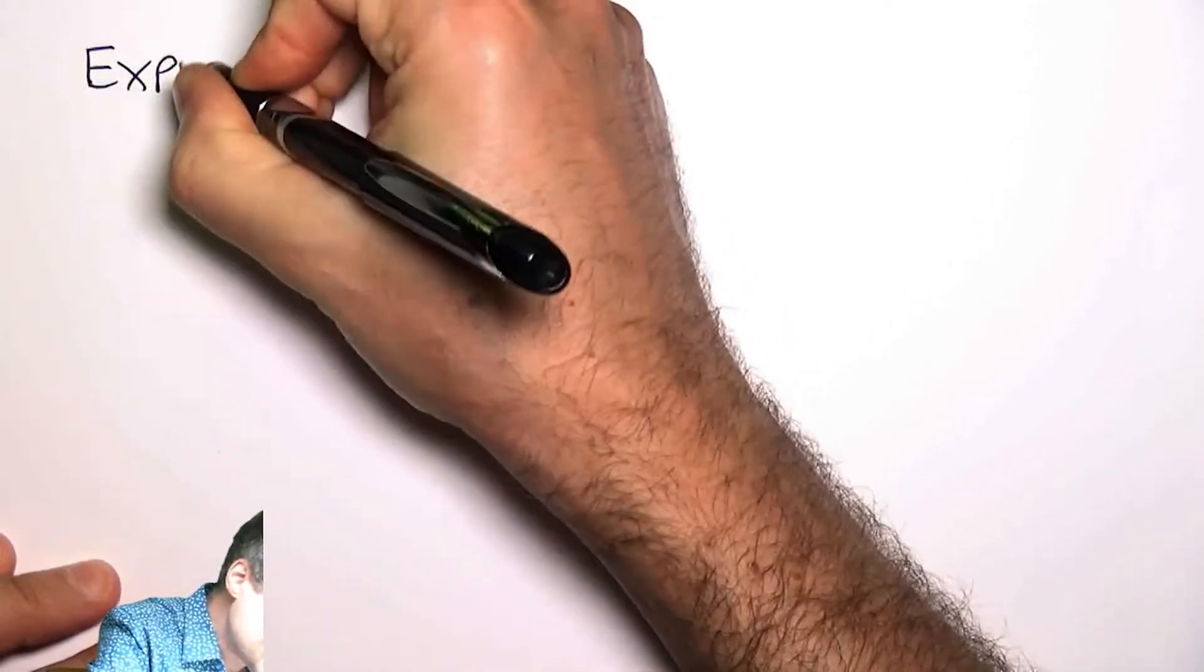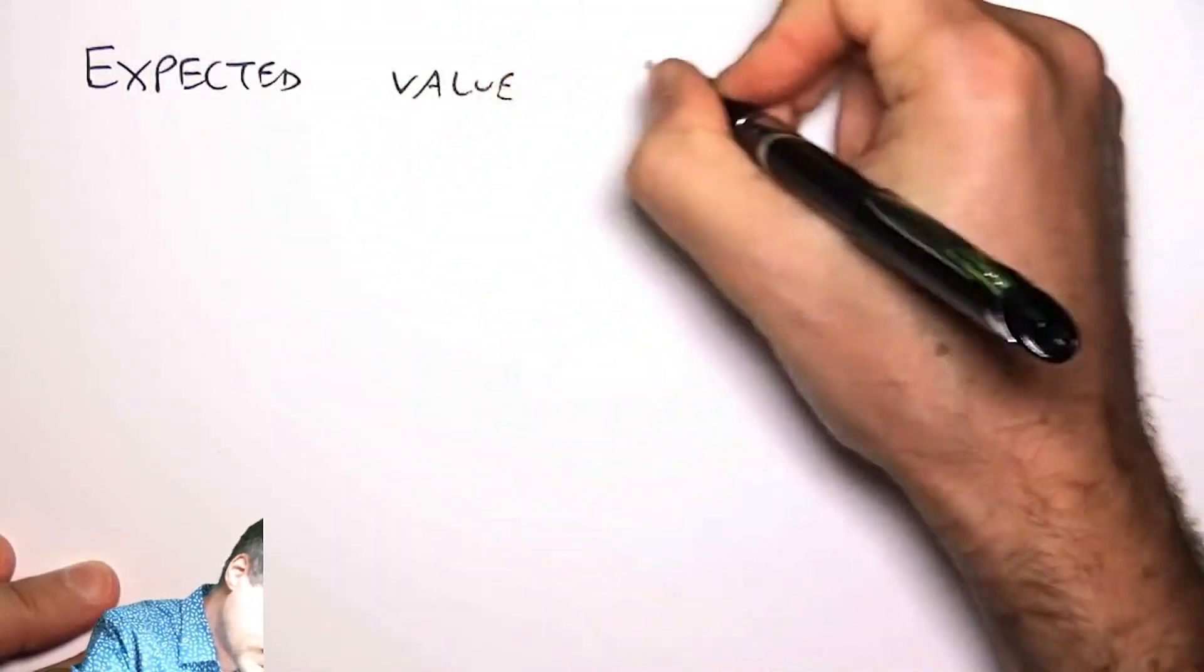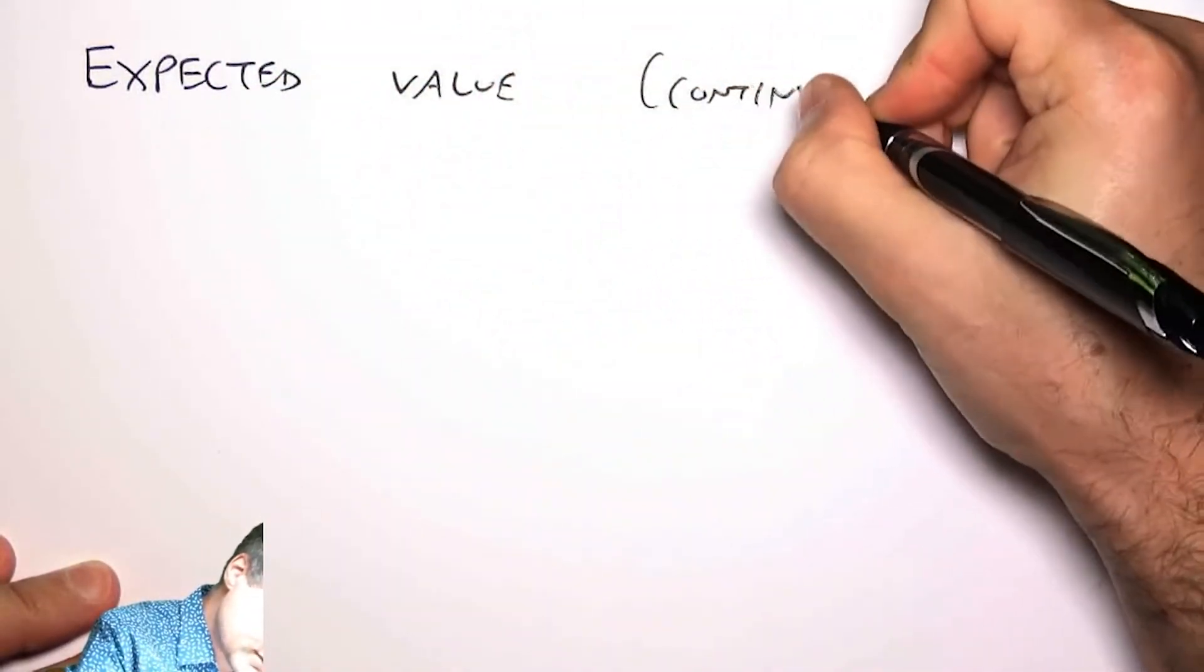So now that we know about continuous random variables, we can start to talk about the expected value just like we did for discrete random variables. So we're going to return to this idea, expected value, but for continuous random variables.